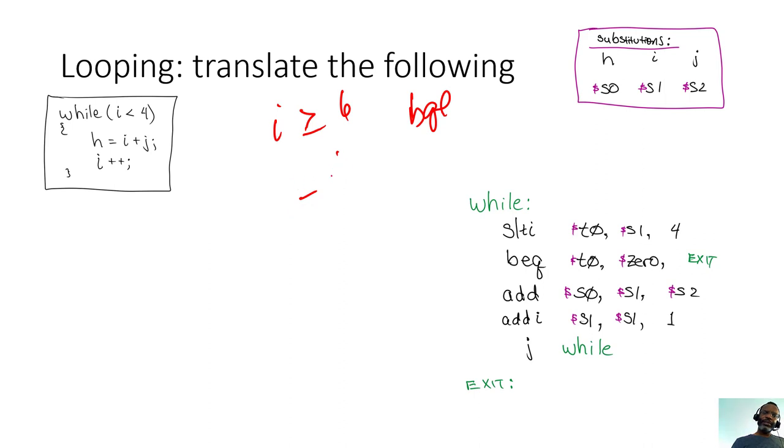The other way of thinking about this, the problem with what I just tried there is that we still have the equal to check. So the opposite of i less than 6 is, the opposite of i greater than or equal to 6 is i less than 6. So that's one way of doing a conversion. If you have this, i greater than or equal to 6, you can do a set on less than immediate.